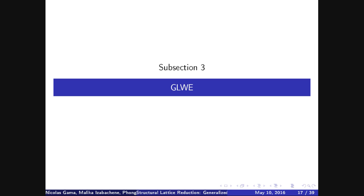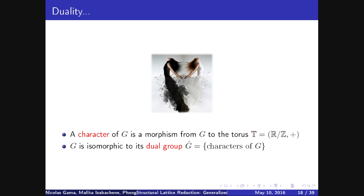So that's for SIS. Now let's go to LWE. In order to introduce LWE, we need to recall some basic properties of duality. We start with the definition of a character. A character is simply a morphism, an additive morphism from a group G to the torus. The torus are just the real numbers modulo one. So it's a group. It's not a ring. There is no multiplication. And every group is isomorphic to its dual group, which is the set of all the characters.